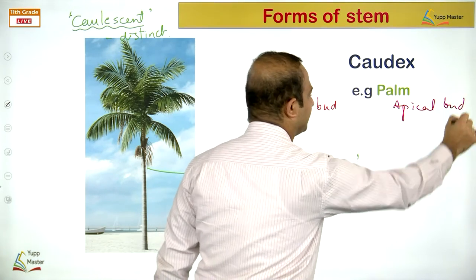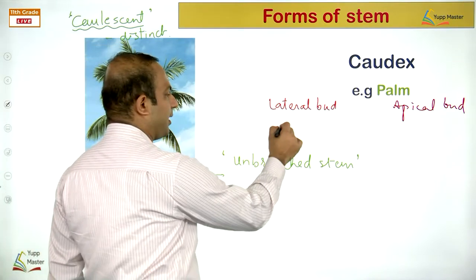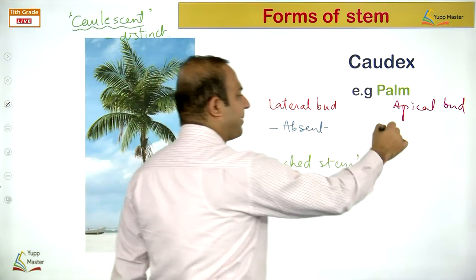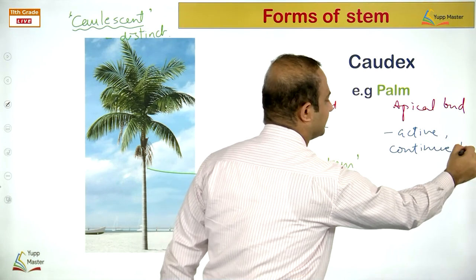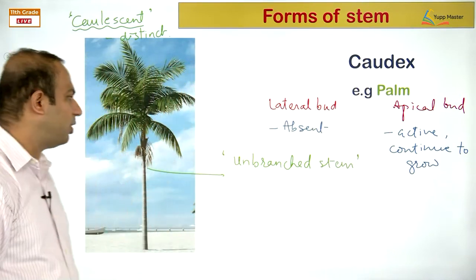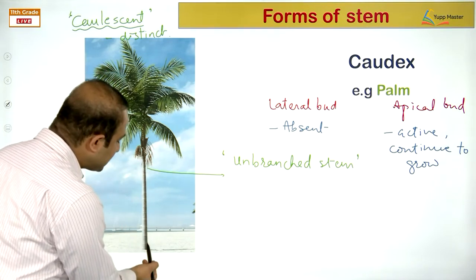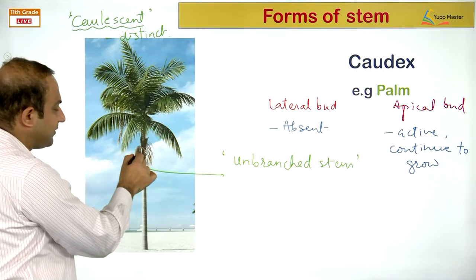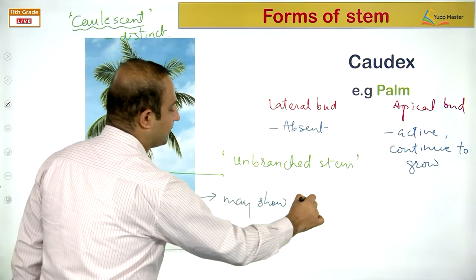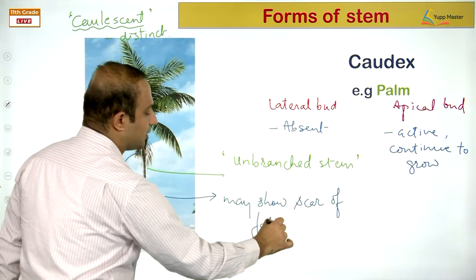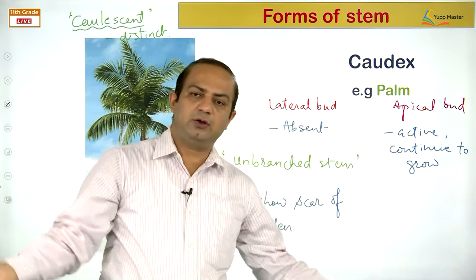Climbers have some organ for climbing. The first type is tendril climbers. In Lathyrus (wild pea), the entire leaf is modified into a tendril. In Pisum (garden pea), only the terminal leaflet is modified. In Clematis, the petiole is modified into a tendril. In Gloriosa, the leaf apex becomes a tendril. Even the stem may get modified into a tendril — seen in Vitis and Passiflora (axillary bud) and Cucurbits (terminal bud).